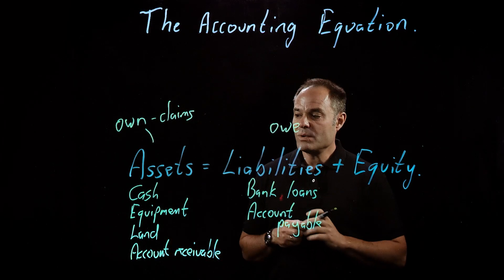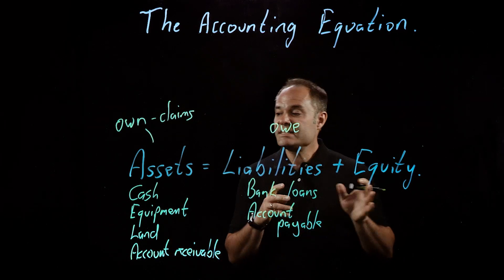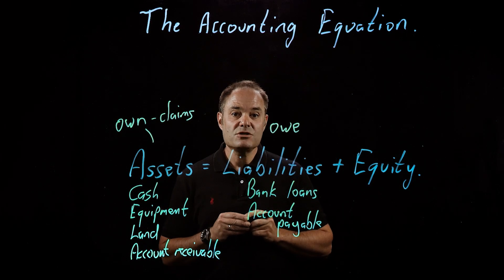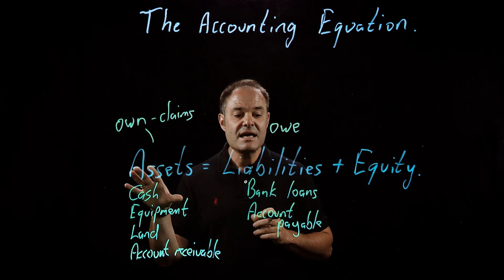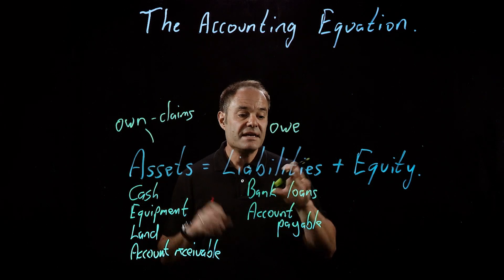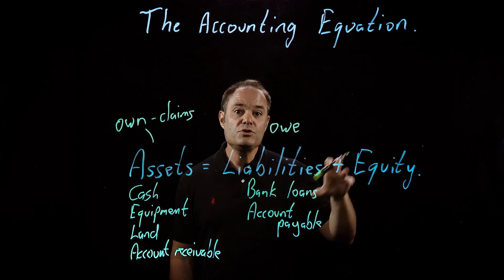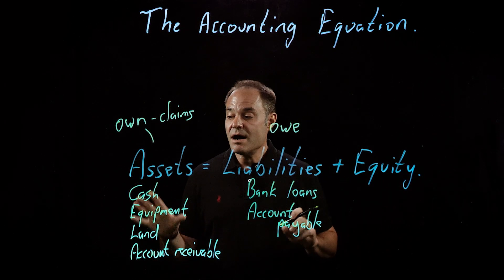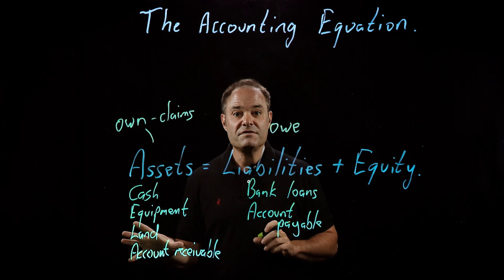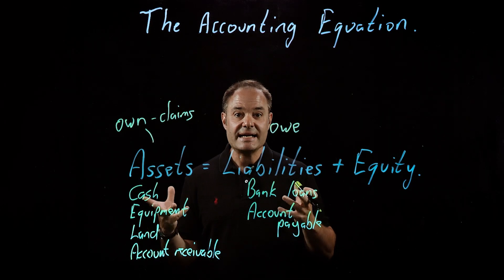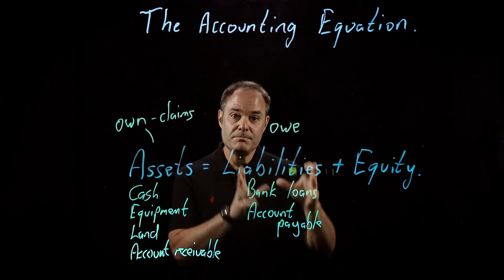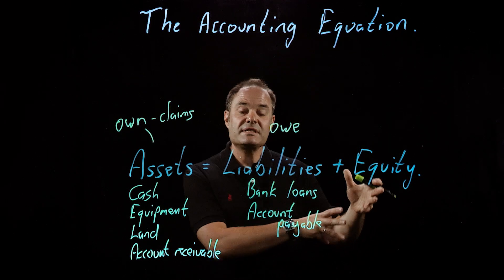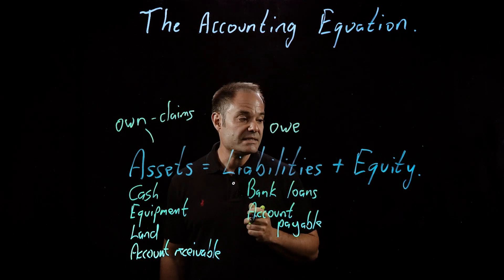Equity, the third part of the equation, is essentially the difference between assets and liabilities. It's the amount — the value of the assets — that ultimately accrues to the owners, to the shareholders of the business. Think of it as selling off all of the assets to get cash, taking that cash and paying back all the money that you owe, and then whatever is left over is the equity in the business.